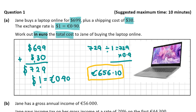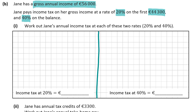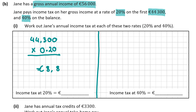For question 1A you get a total of 10 marks for the correct answer. Now in question B we're dealing with tax. We're told that Jane has a gross annual income of €56,000. She pays income tax at 20% on the first €44,300 and 40% on the balance. We're asked to work out Jane's annual income tax at each rate. So first: 20% of €44,300 — multiply by 0.2 — and that gives us €8,860.